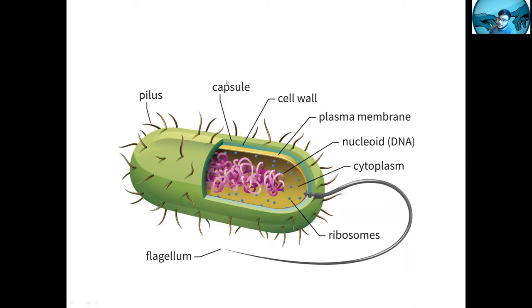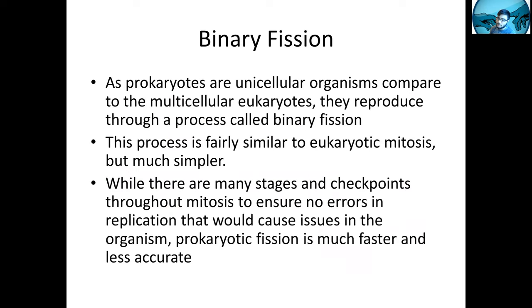Here is an example of what a bacterial cell looks like. You can see it has a cell wall, pili, a membrane inside the cell wall, and DNA floating around — not in a nucleus. It has ribosomes, again not membrane-bound, cytoplasm, and a flagellum, which is very important for mobility and movement of the bacteria.